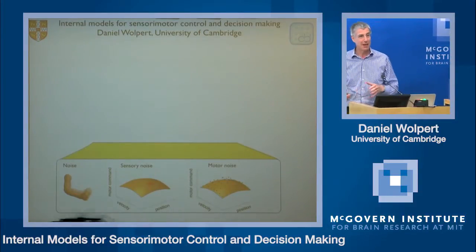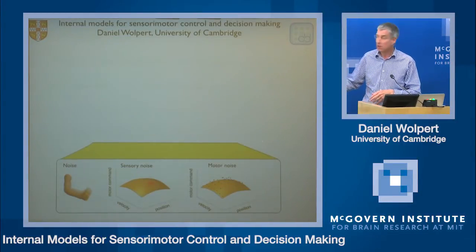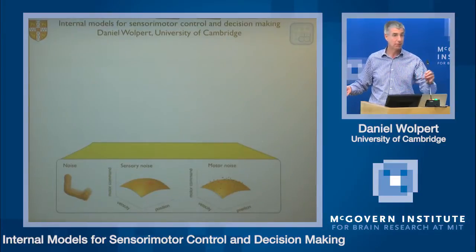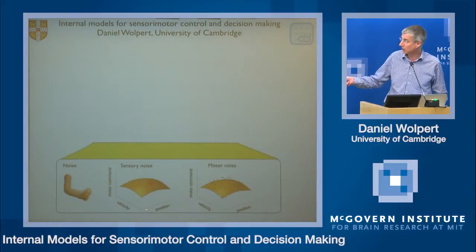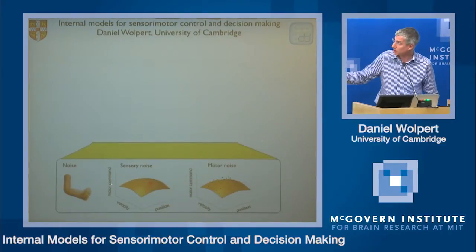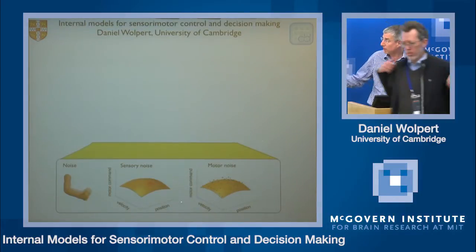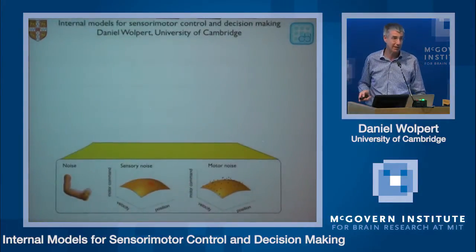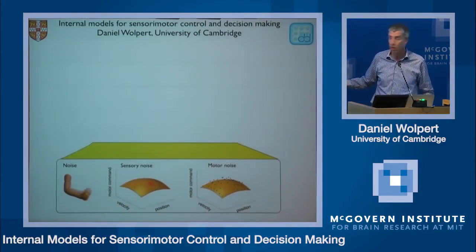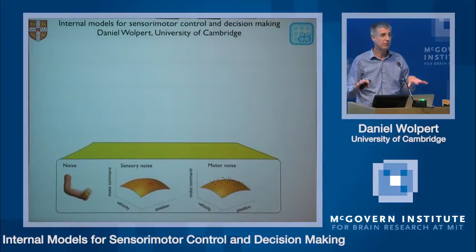I spend most of my time thinking about low-level sensory motor control. When you want to handle objects, you might have to learn a control policy as a function of the state of the limb, such as position and velocity, and this control policy may have some interesting shape. Because of noise in sensory inputs, you may not know quite where you are, so you'll have to do some clever Bayesian inference to estimate that. And even if you knew where you were, because of variability in motor output, there may be problems producing the correct control. But that's at a very low level for a single task.